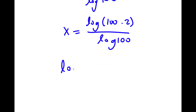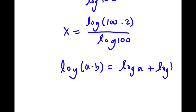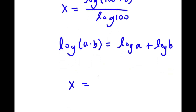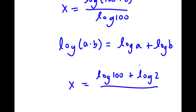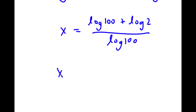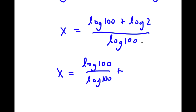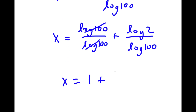If I have something in the form log a times b, this is equal to log a plus log b. So log of 100 times 2 is equal to log 100 plus log 2, and I have this over log 100. Now log 100 plus log 2 over log 100 is the same thing as log 100 over log 100, plus log 2 over log 100. Log 100 over log 100 simply cancels to 1, so now I have x is equal to 1 plus log 2 over log 100.